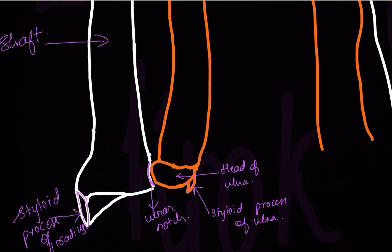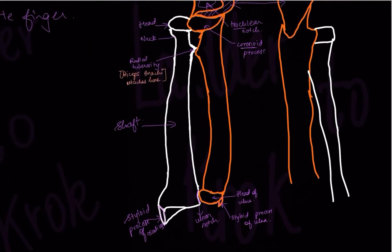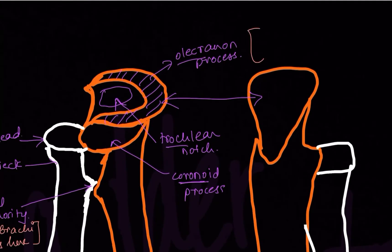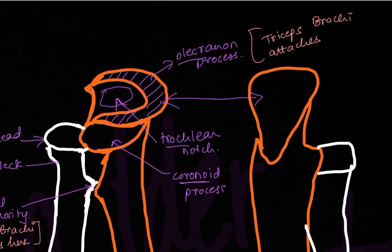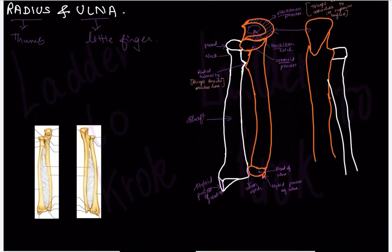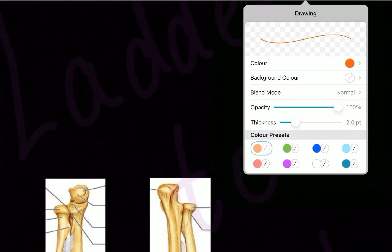Now for muscle attachments you should remember: the triceps brachii, which is present on the posterior side of the arm, attaches to the superior surface of the olecranon process. Biceps are on the anterior side of the arm. We will cover these muscles in more detail soon. Before moving to joints, let me mention one more structure.